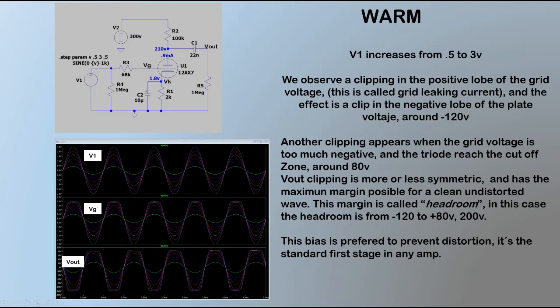We see another clip in the positive lobe of the plate voltage. If we keep on increasing the input signal, at some point near four or five volts peak to peak, the output signal will be clipped in the positive and in the negative lobe, more or less symmetrically. This is the principal characteristic in the warm bias.